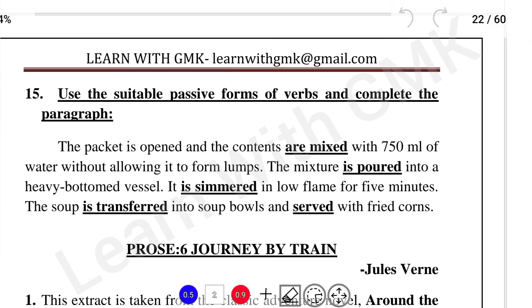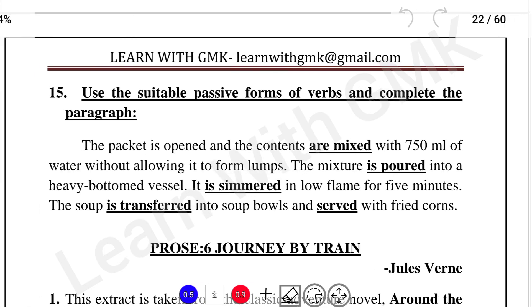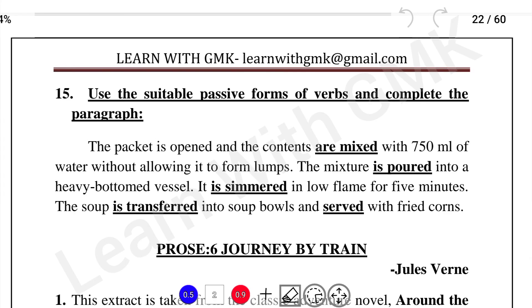The packet is opened and the contents are mixed with 750 ml of water without allowing it to form lumps. The mixture is poured into a heavy-bottomed vessel. It is simmered on low flame for 5 minutes. The soup is transferred into soup bowls and served with fried corns. These are all in passive form.